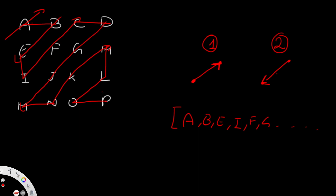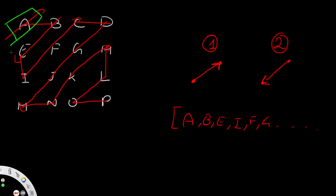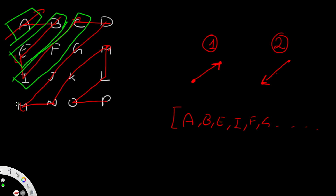That is one way of doing it — solving it like a simulation. But I want to go through a second solution which I personally think is a little bit easier. In this solution, we're going to divide everything into diagonals: A is one diagonal, B and E are one diagonal, I, F, and C are one diagonal, and so on. The basic idea is that we're going to have a set of diagonals and add them to some sort of list.